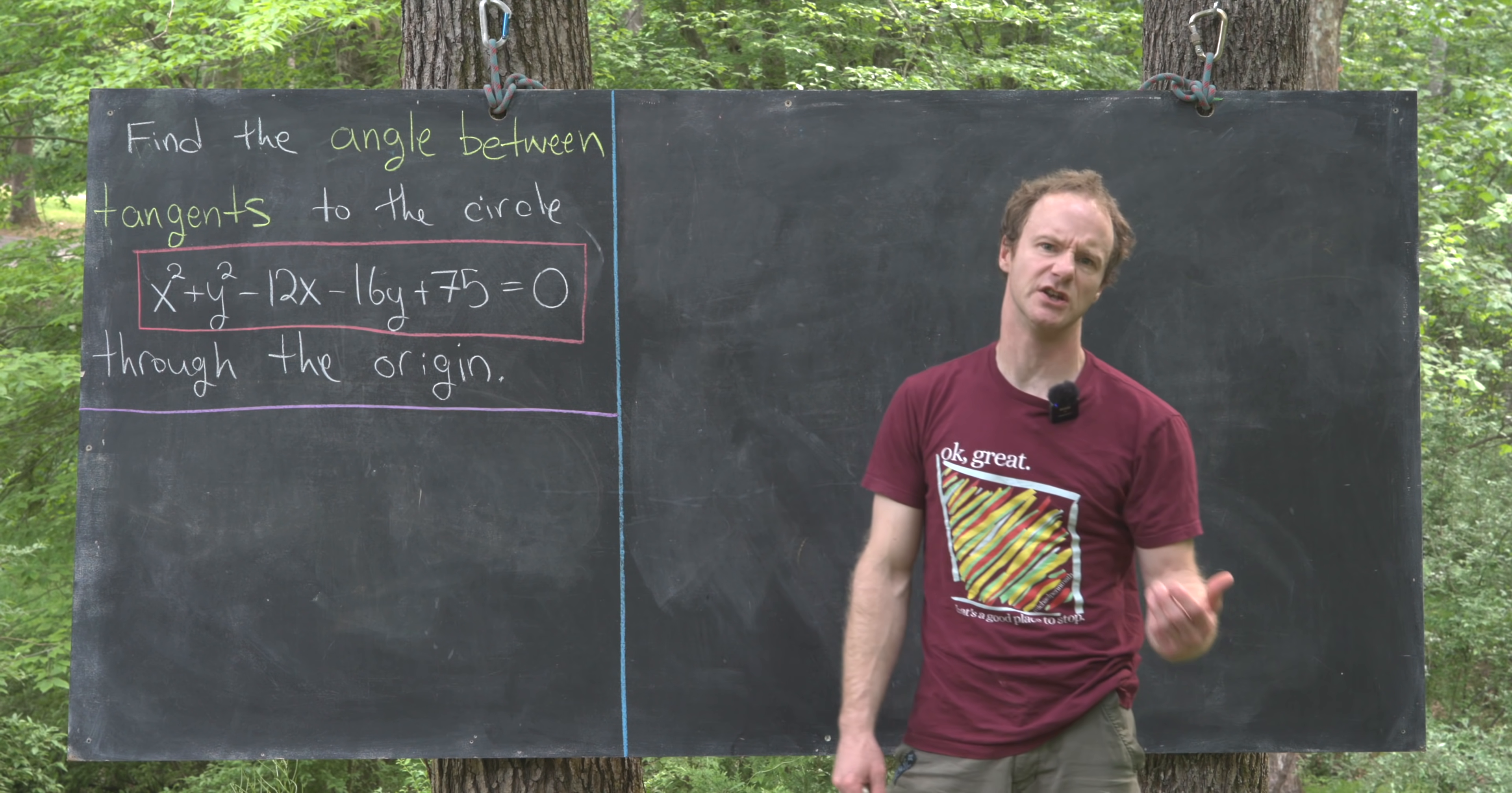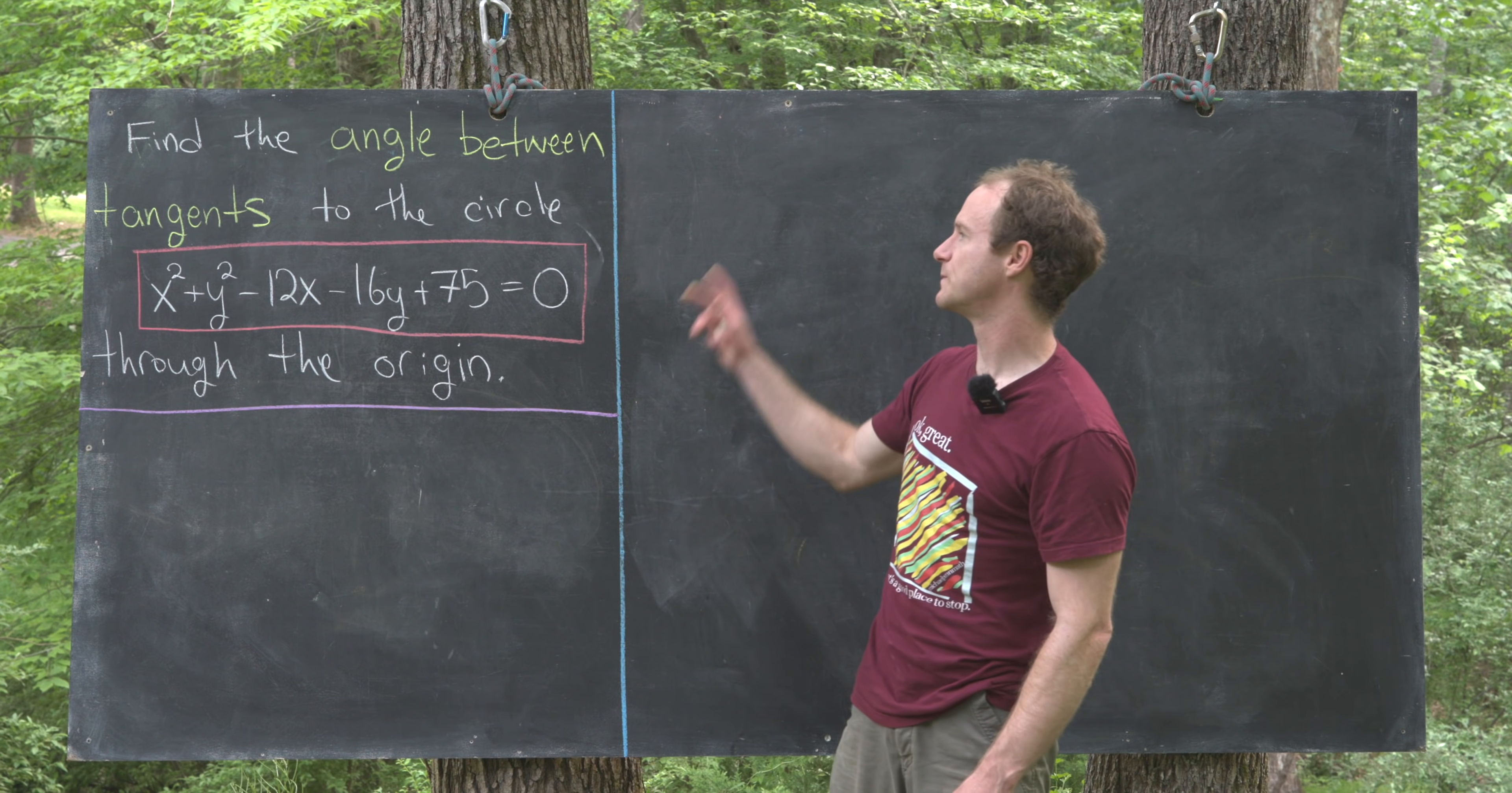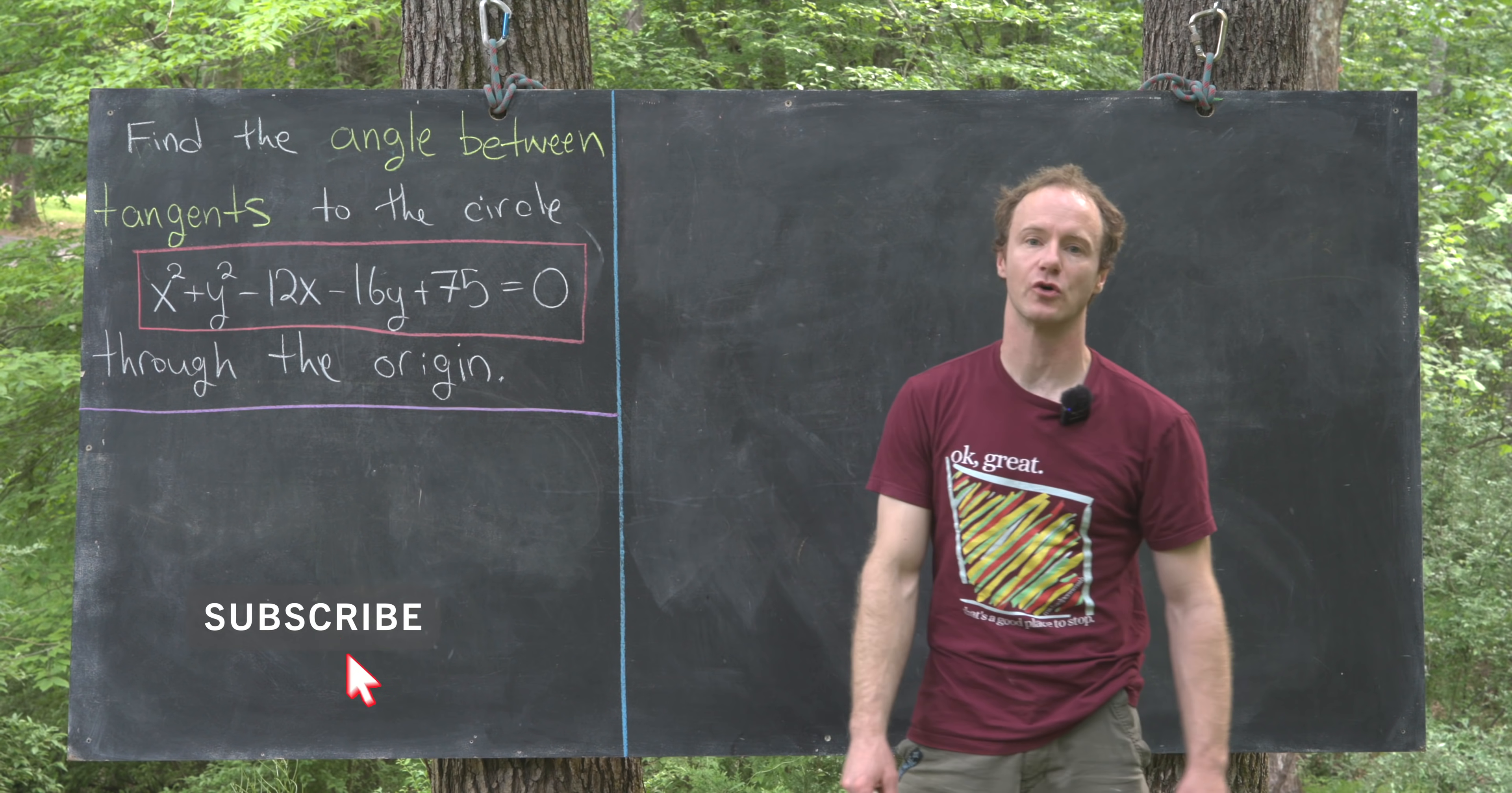Here I've got a nice problem that uses the notion of implicit differentiation. Let's see what we have. We want to find the angle between tangents to the following circle that also go through the origin.